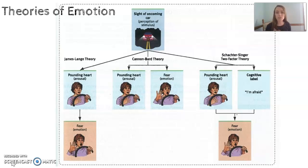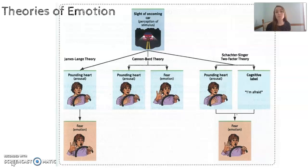This chart gives an example of how each different theory would explain what the emotion is and how it works through the body and mind. If we start with an oncoming car — suppose you're driving and there's a car coming toward you down the center lane — you will experience an emotion. Starting with the James-Lange theory, over on the left side.